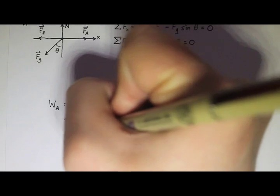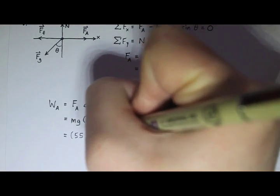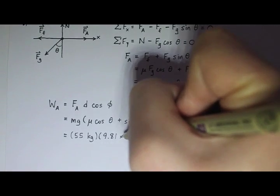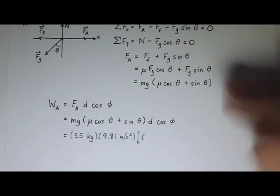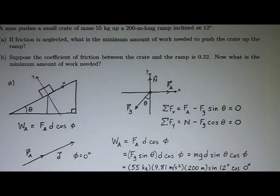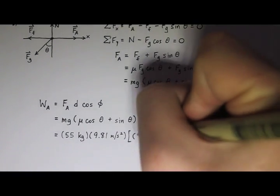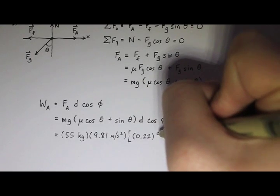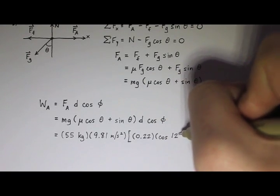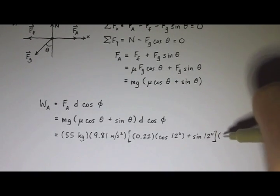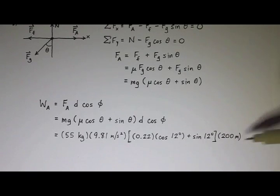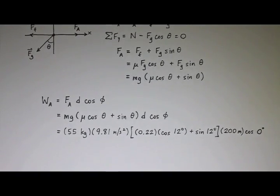The mass is 55 kilograms, g is 9.81 meters per second squared. For mu, going back to the problem, the coefficient of friction is 0.22. So we have 0.22 times cosine of theta — which is 12 degrees — plus the sine of theta, which is 12 degrees. The displacement is 200 meters, times the cosine of phi, which is 0 degrees. Remember phi is different from theta.